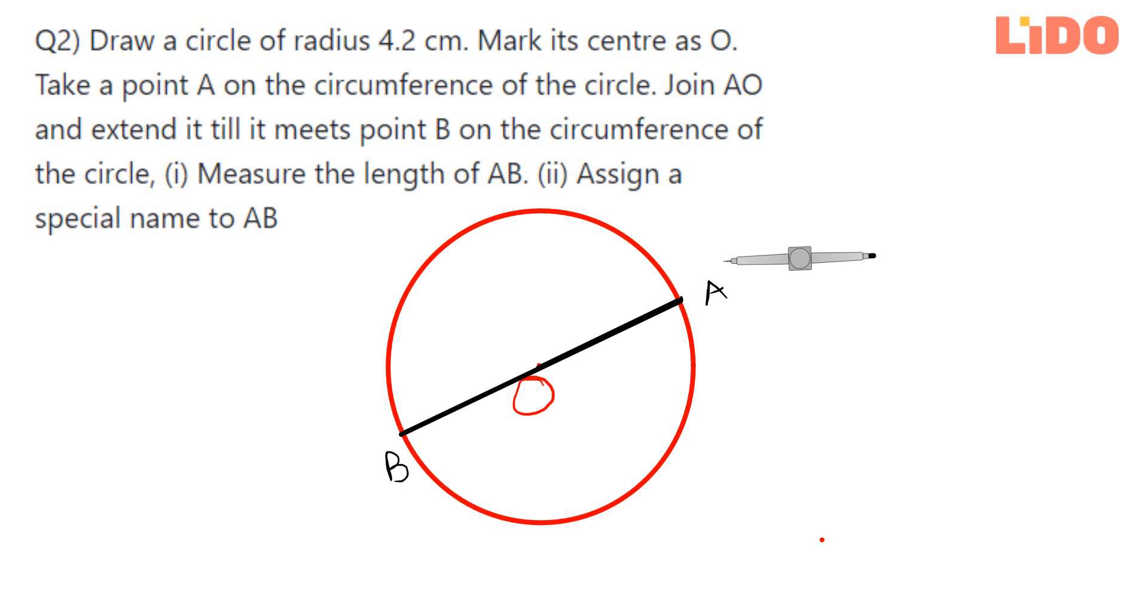Now as you can see, measure the length of AB. We know that this is the radius, which is 4.2 centimeters. So AB is definitely going to be how much? 8.4 centimeters. And assign a special name to AB.